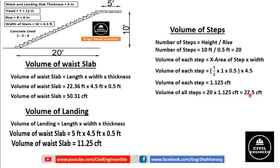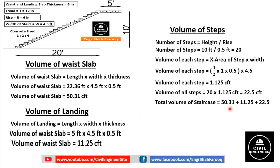To determine the total volume of the staircase, we add all volumes: 50.31 cubic feet for the waist slab, 11.25 cubic feet for the landing, and 22.5 cubic feet for the steps. Total volume of staircase equals 84.06 cubic feet.